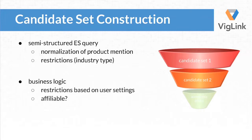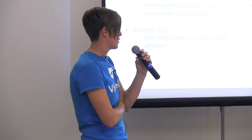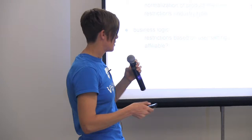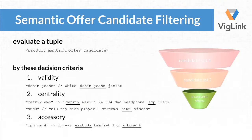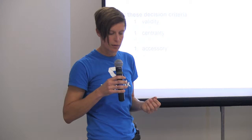We usually start with a semi-structured query to Elasticsearch which gives us a lot of offers, basically looking for a normalized version of the product mention. We do a couple of restrictions by industry type and user-specific settings. Then there's some business logic on top of that to filter even more. What's more important is what we do on the semantic side to get to a set of offers which are actually acceptable, out of which we can select. The question is: given a product mention and an offer candidate, is this an acceptable offer?